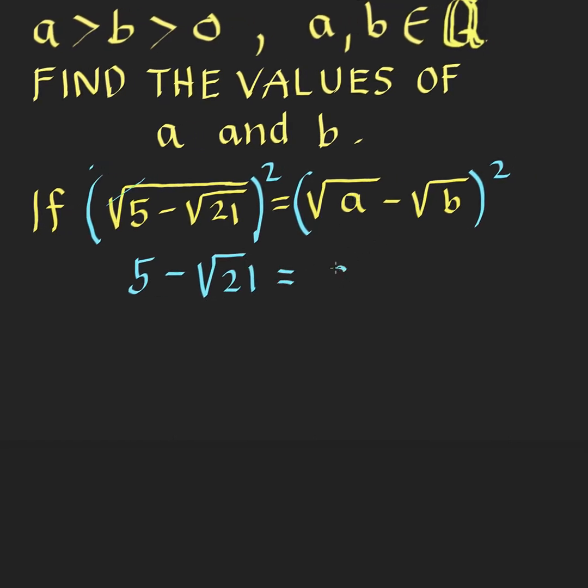So the square of the first term is A minus twice the product of the first and the second term. So minus 2 times square root of A times square root of B, which is the same as minus 2 times the square root of AB plus the square of the second term, which is B.